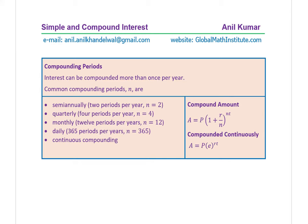Now let's talk about compounding periods. In the previous example, the amount was compounded annually, but it could be compounded many times during the year. Common compounding periods are: semi-annually (N equals 2), quarterly (N equals 4), monthly (N equals 12), daily (N equals 365), and continuously, where N approaches infinity. For continuous compounding, we have a special formula: A equals P·e to the power of R·T.